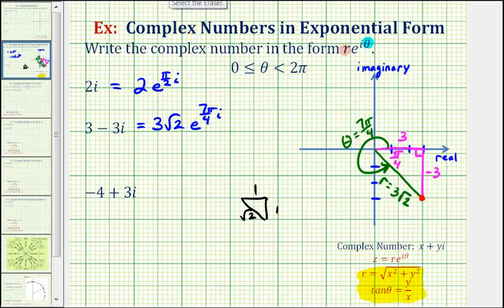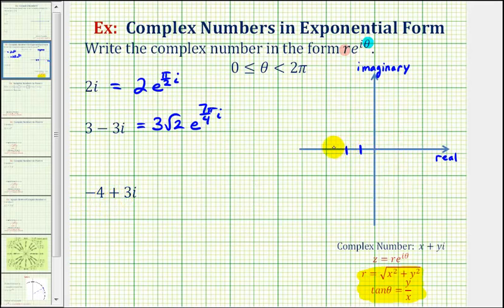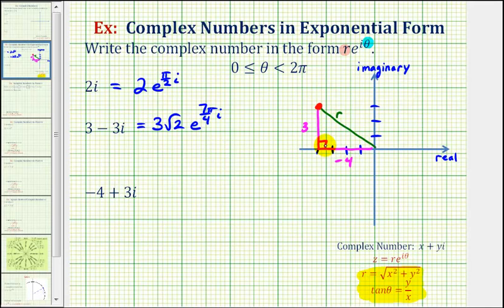Now let's look at the last example: negative four plus three i. We'll mark off negative four on the real axis and positive three on the imaginary axis. This segment here would be r. Let's sketch the reference triangle — this leg is negative four and this leg is positive three. We should recognize this right triangle as a 3-4-5 right triangle, and therefore r equals five. If we didn't recognize this, we could use the Pythagorean theorem to determine r.